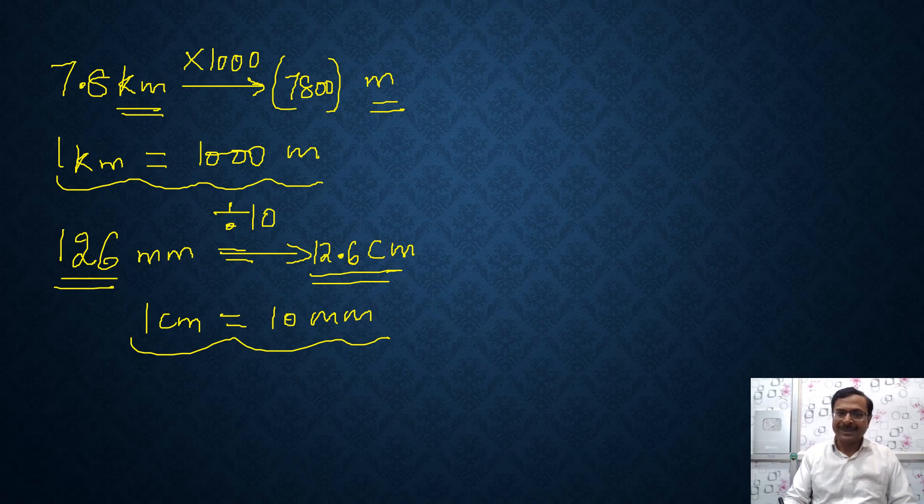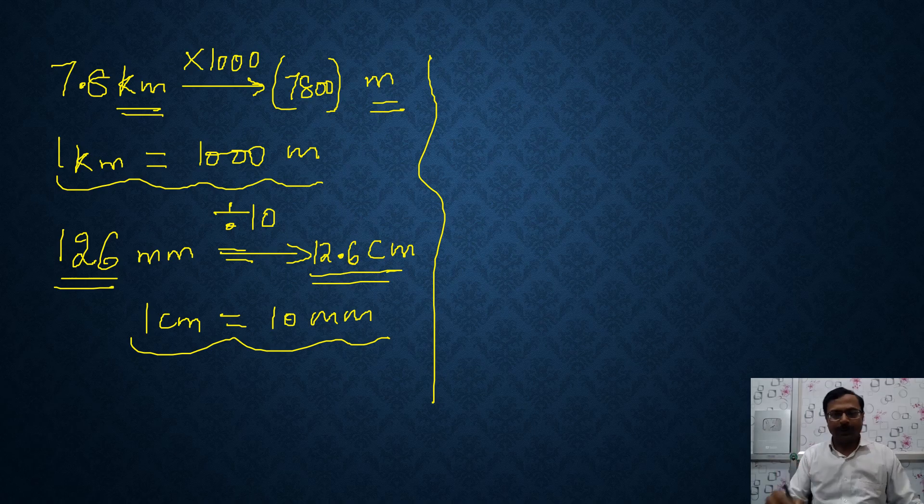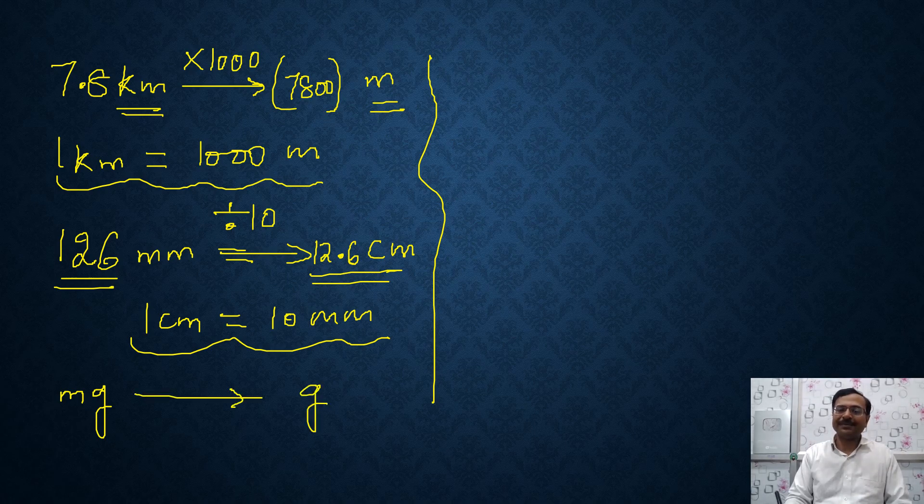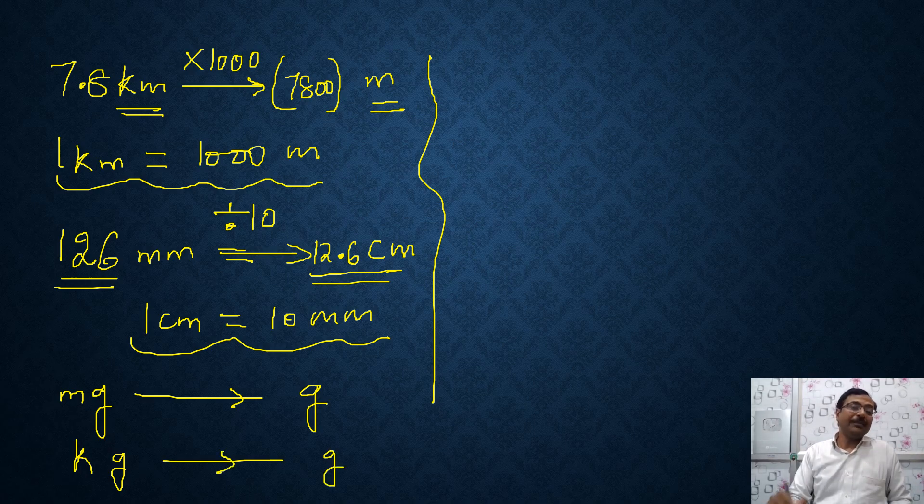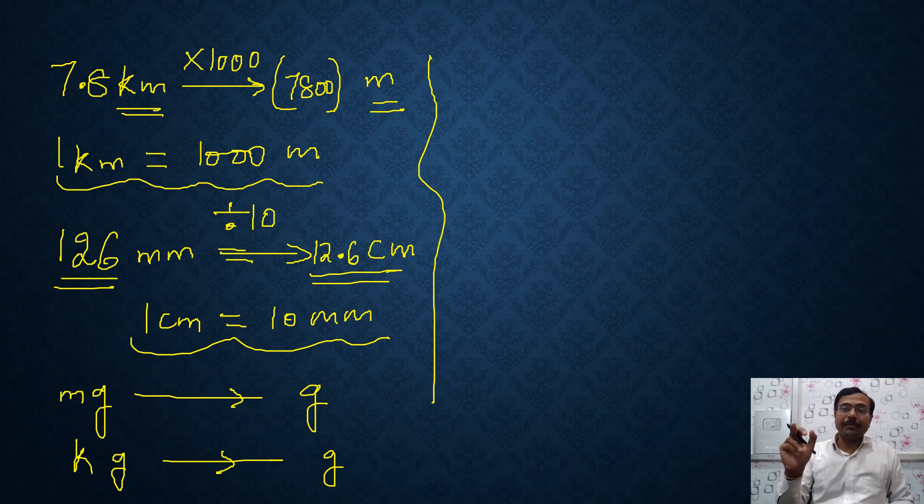This works for distance. This works for weight also, the mass. So let's take one or two examples of weight. Then I'll come to volume. For weight, suppose you have milligrams and I want to convert that into grams or kilograms to be converted into grams. Now immediately I know that if I convert milligram into gram, I am converting a small unit into a larger one. And if I convert kilogram into gram, I am converting that into a smaller unit. So the first one involves division and the second one involves multiplication.